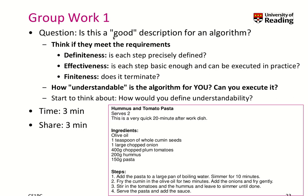Group work one: let's look at our hummus and tomato pasta. Is this actually a good description for an algorithm? Think about the requirements we talked about for algorithms: definiteness, effectiveness, and finiteness. Then think about how understandable this is for you, and a very simple question — can you execute this algorithm? Can you create this hummus and tomato pasta following these steps? Take about three minutes for that and please pause the video now.